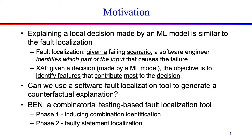Ben, given a T-way test set, identifies a failure-inducing combination that causes every test containing the combination to fail. So in this work, we adapt Ben to identify a minimal subset of features in an image that, if removed, would result in a different classification.